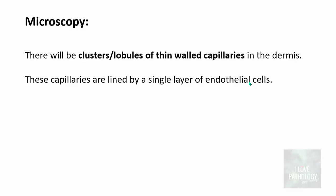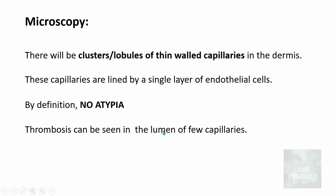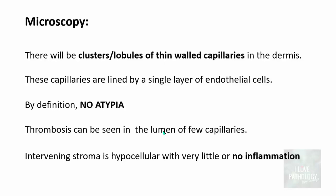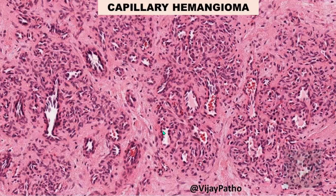On microscopy, capillary hemangiomas are composed of clusters — lobules of thin-walled capillaries in the dermis. These capillaries are lined by a single layer of endothelial cells. By definition, because this is a benign tumor, there will be no atypia. Thrombosis can be seen in the lumen of a few capillaries. The intervening stroma is usually hypocellular with very little or no inflammation at all — this is a very important point to remember.